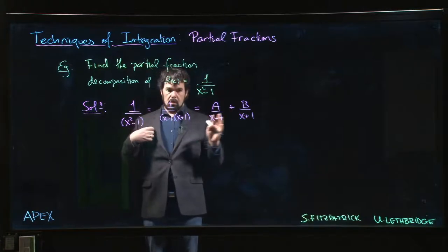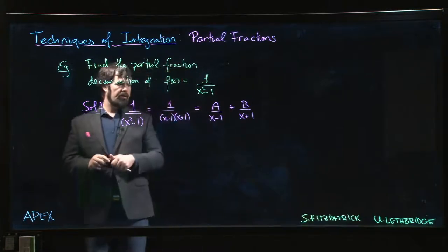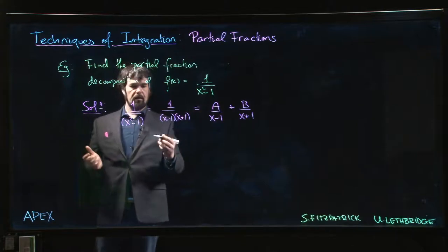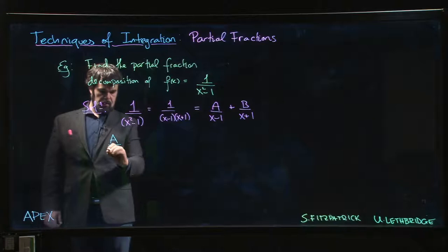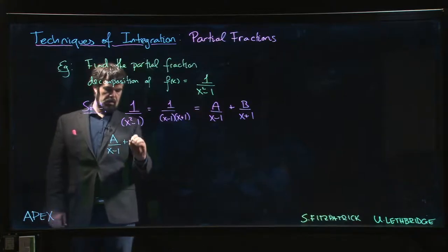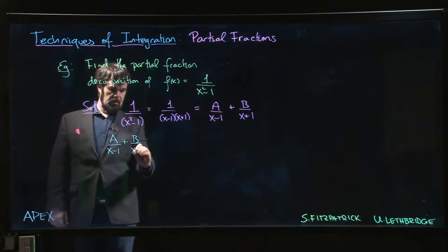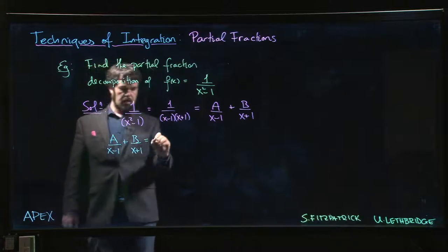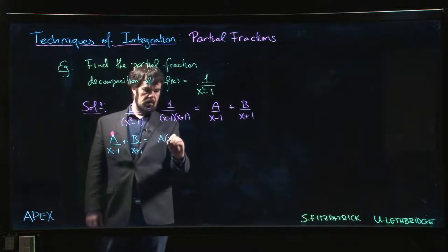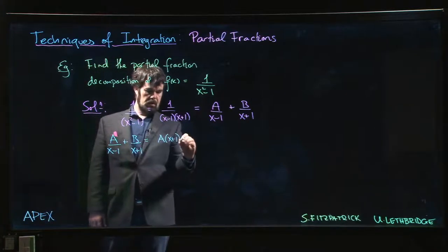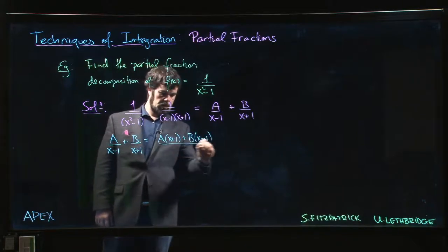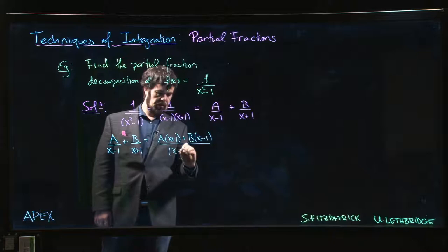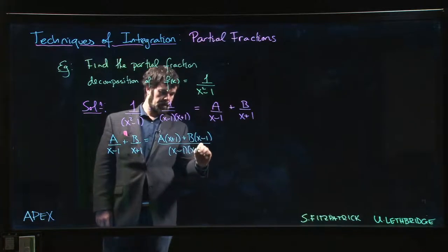So what we can do is get a common denominator on the left hand side. So A over x minus 1 plus B over x plus 1 is A times x plus 1 plus B times x minus 1, all over x minus 1 times x plus 1.